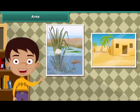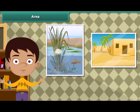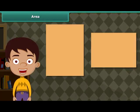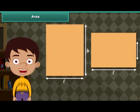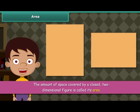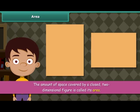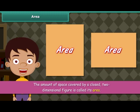Take two paintings of different sizes and compare them. The amount of space covered by the two paintings will be different, because the lengths and breadths of the two paintings are different. The amount of space covered by a closed two-dimensional figure is called its area. Area of one such figure can be different from the area of another such figure.